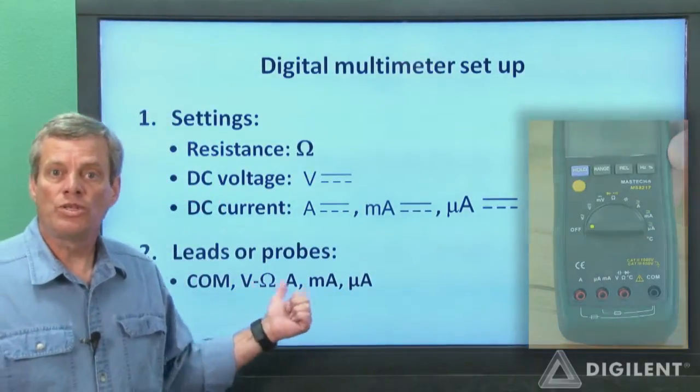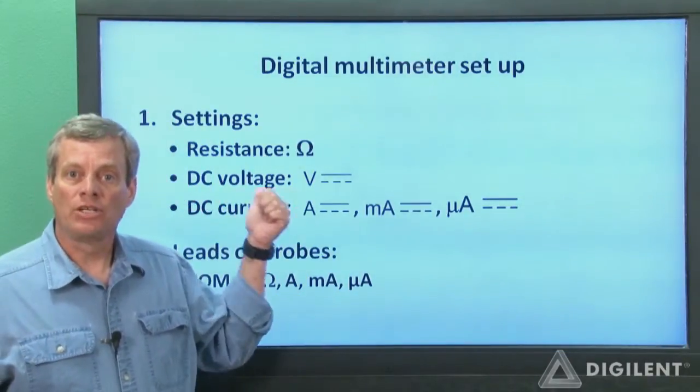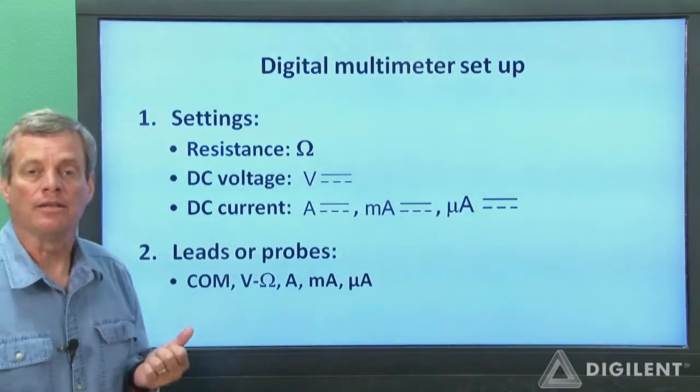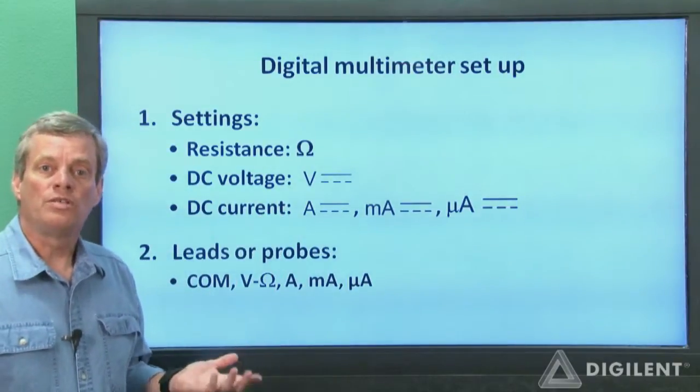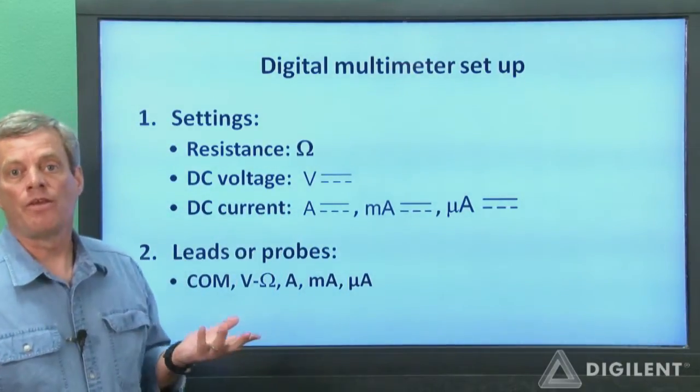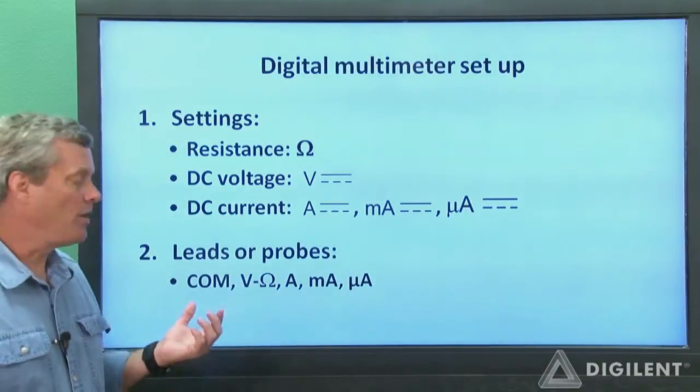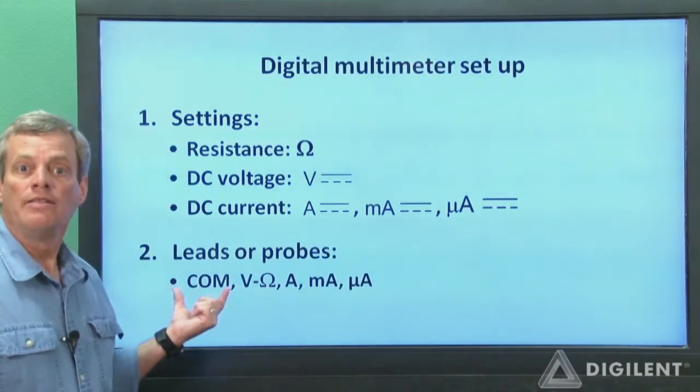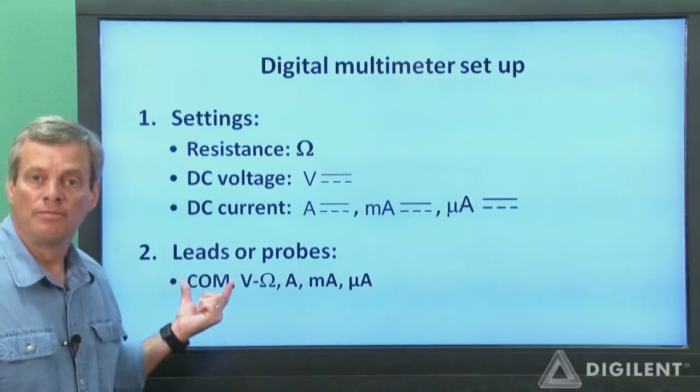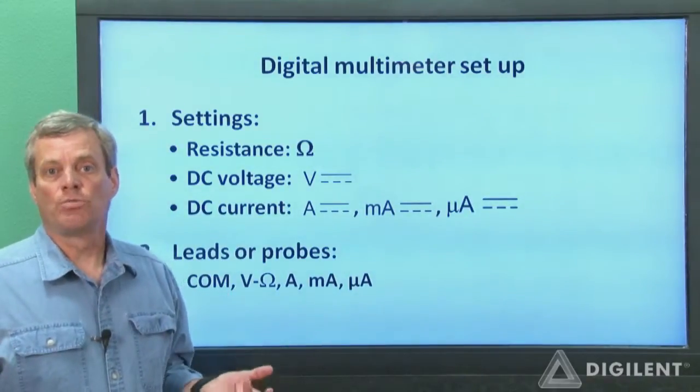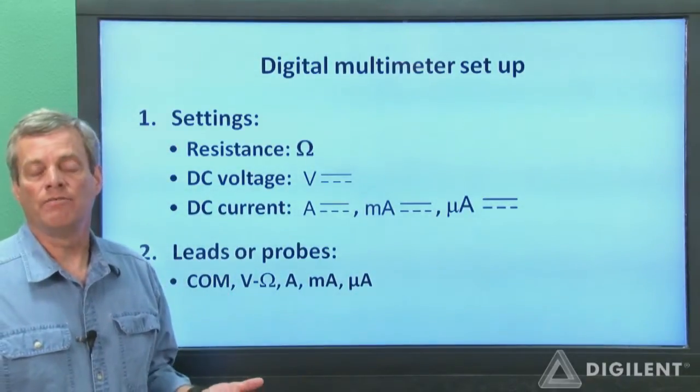One of the ports that you use on the DMM generally has to match the label of the position that you put the dial in. The COM port is used for all of our measurements. Therefore, to measure a voltage, we plug one probe into the V port and the other probe into the COM port. Other projects in this module provide more detail about how to make the individual measurements.